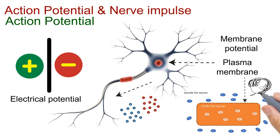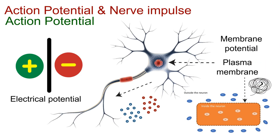This difference in electrical charge across the membrane is called the membrane potential. So, how much membrane potential does a neuron have when it's not transmitting any signal? In its resting state, the outside of the neuron is more positive, while the inside is more negative. This state is known as the resting membrane potential.